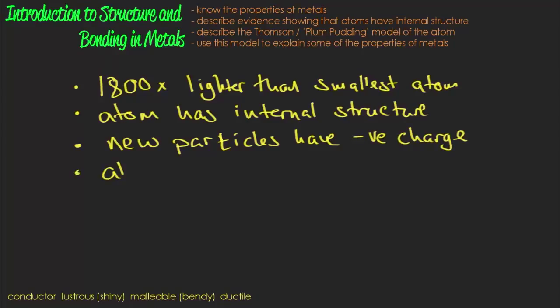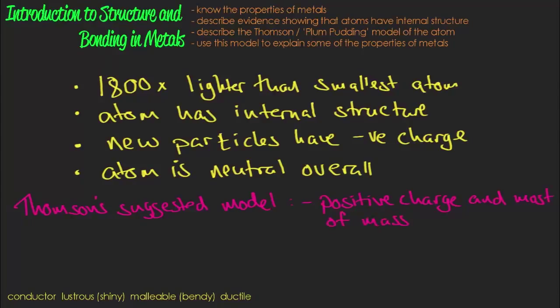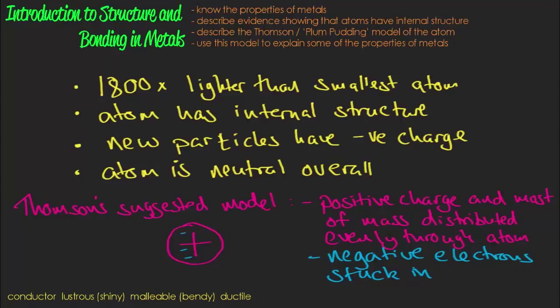So we now knew that these particles are about 1,800 times lighter than an atom, and they have a negative charge. And we know that the atom is neutral. So Thomson came up with a model where there was positive charge evenly distributed throughout the rest of the atom, but with these small particles stuck into it, kind of like blueberries in a muffin. It came to be known as the plum pudding model, after a dessert with bits of fruit stuck in it.